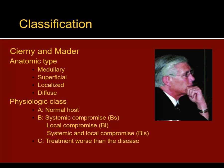For classification, you should really familiarize yourself with the Cierny-Mader classification. George Cierny has done a lot of work on osteomyelitis and has helped us understand what's going on, how to think about it, and how to treat it. This is a very important classification if you're going to think about chronic osteomyelitis. You first break it down into anatomic types: is it medullary, superficial, localized, or diffuse?